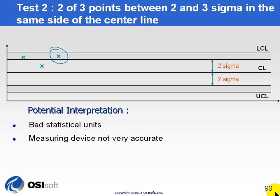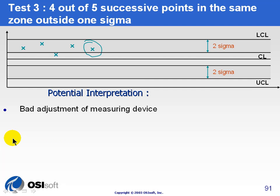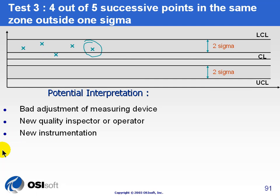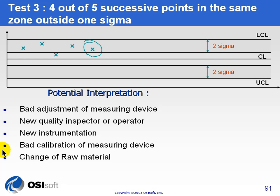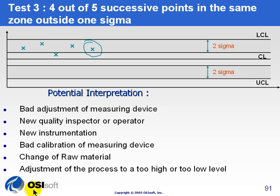As you go through the list of different Western Electric tests, you'll notice that many of them involve either bad fundamental assumptions on your data when you created the alarm limits, or measuring devices that are becoming inaccurate. Things come up fairly routine, but you'll find some new ideas — for example, perhaps there's been a change in raw material. In test three, four to five successive points in the same zone would be an indication that the material being measured is just not the material you think you're measuring. It could also be an adjustment of the process to too high or too low a level — somebody's changed a set point, so it's fundamentally running the process a little differently, which means your SQC alarms are no longer within the right range.